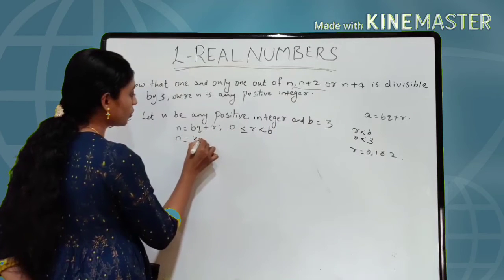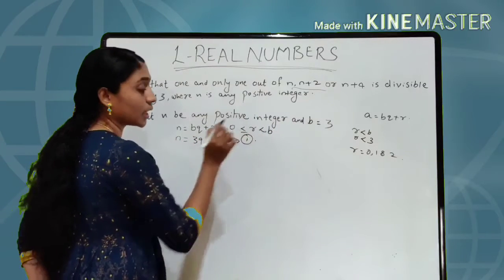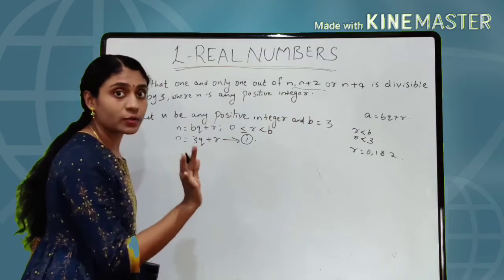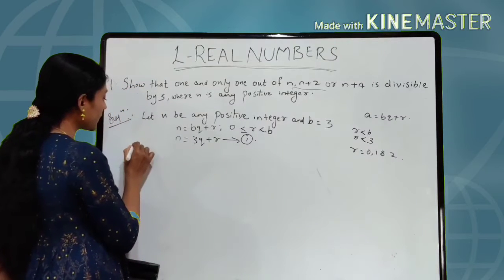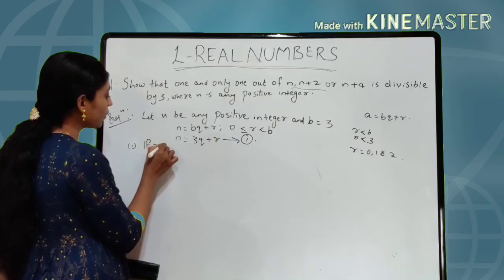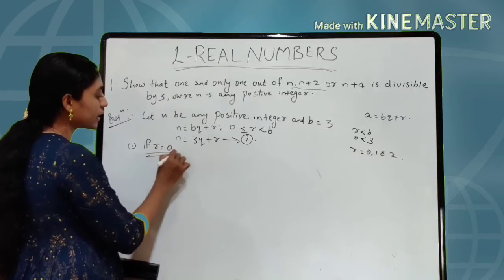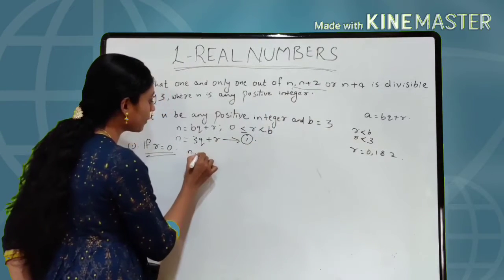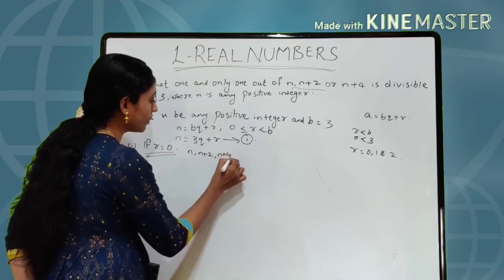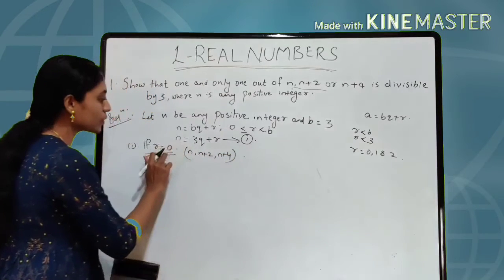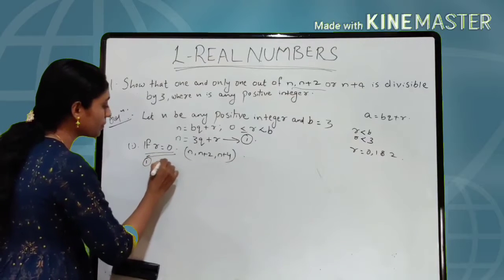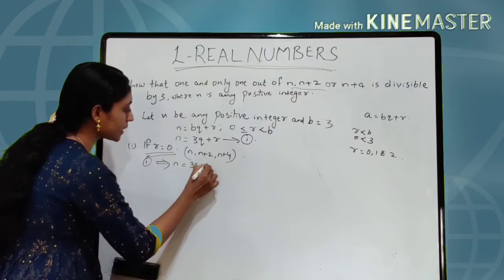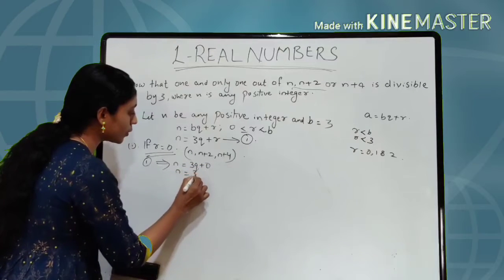So R can take values 0, 1 and 2. We know the value of B is 3, so we can write N = 3Q + R as equation number 1. Now suppose R can take 3 values: 0, 1, and 2. First case: if R is equal to 0, equation 1 becomes N = 3Q + 0, which is N = 3Q.